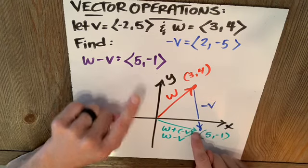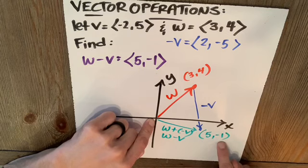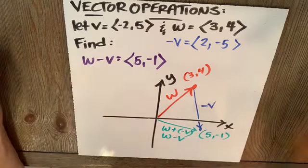If I go over 5, down 1, from the origin, I'm going to wind up at 5, negative 1. I know this is a point because I have curvy brackets. I know this is a vector because I have those crimped brackets.